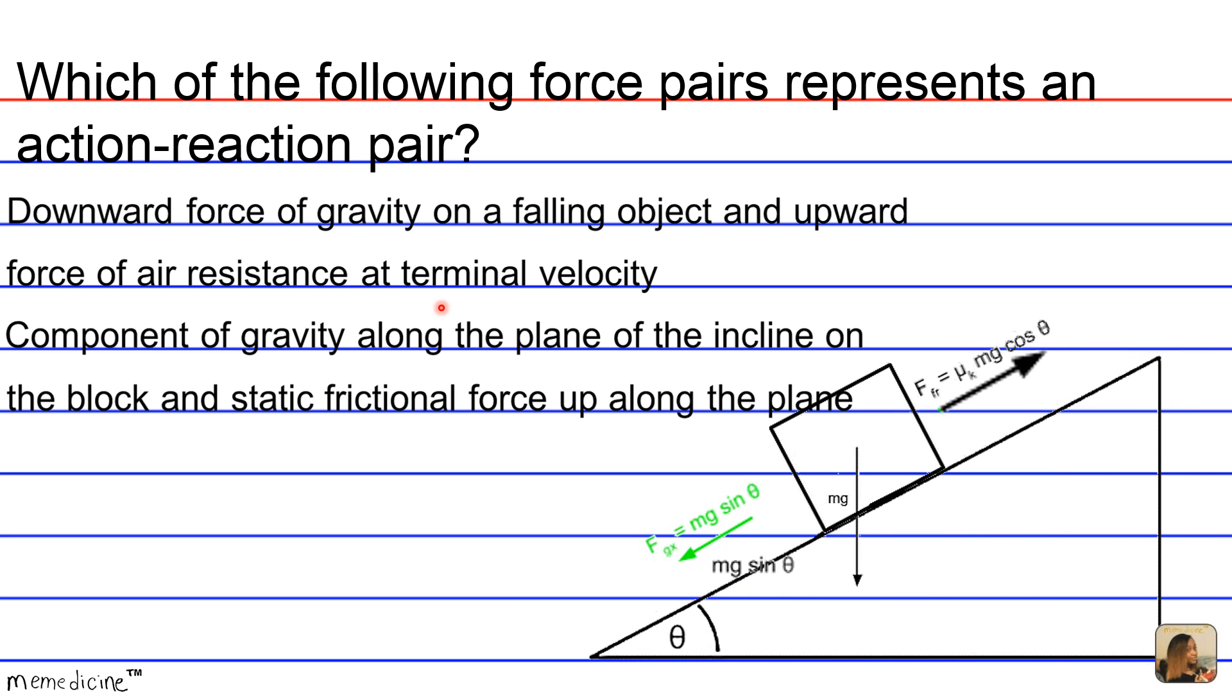Is it B, the component of gravity along the plane of the incline on the block and the static frictional force up along the plane? This should be mu sub s for static, so pretend that sub k is a sub s.